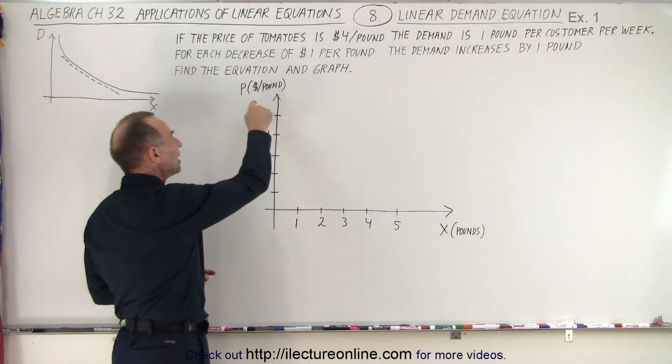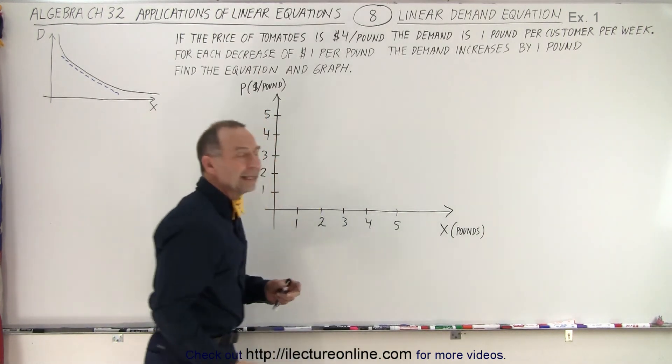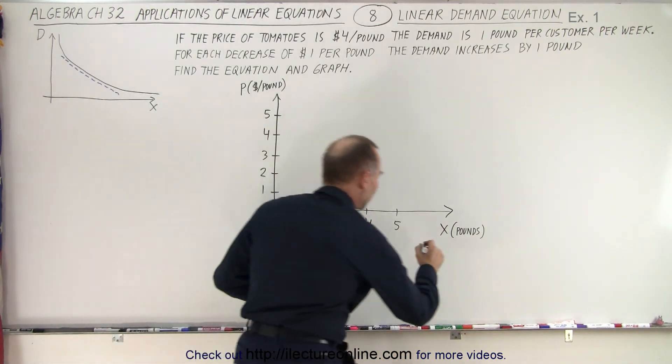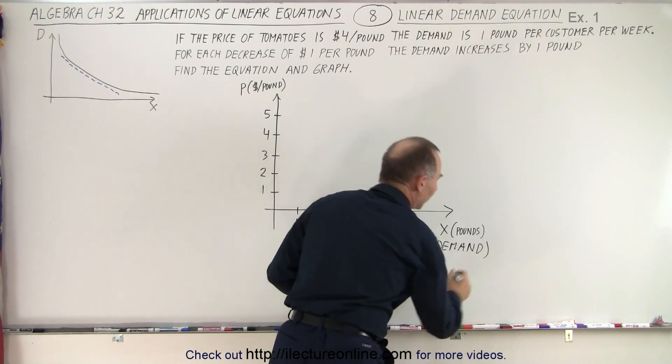So typically the price is what we would call the independent variable, and the demand is the dependent variable.